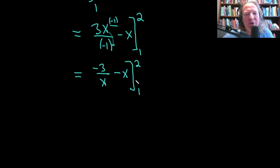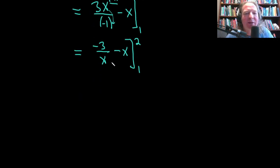Okay, so first we plug in the 2, subtract, then we plug in the 1. So this is equal to, plugging in the 2 for all the x's, get negative 3 over 2 minus 2.